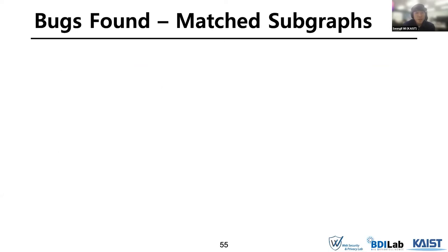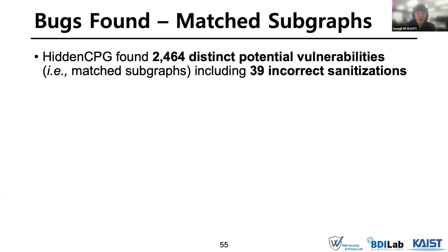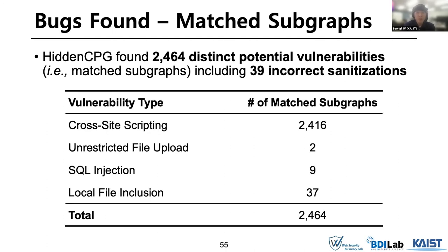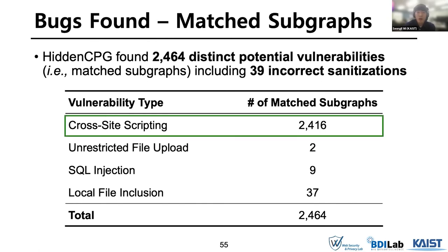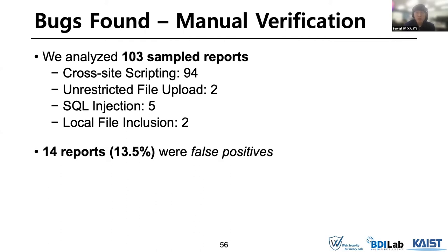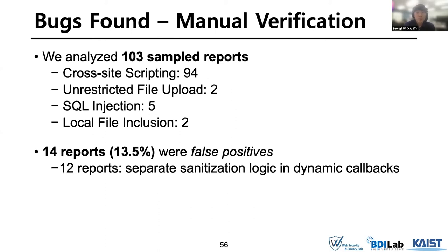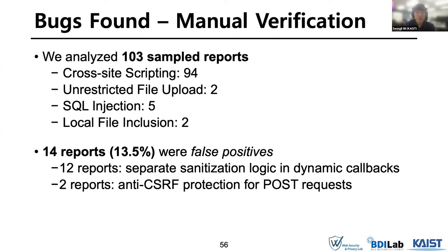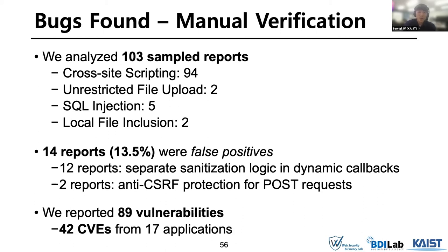We first evaluated the efficiency in terms of finding bugs. We counted the number of matched subgraphs to see the number of potential bugs. Our system found about 2,000 potential bugs, including 39 from incorrect sanitizations. We then sampled and manually verified 103 reports from highly rated applications. About 14% of the reports were false positives: 12 reports stem from separate sanitizations in dynamic callbacks, and 2 reports where developers implemented anti-CSRF protection properly. We reported the remaining 89 bugs to their corresponding vendors and received 42 CVEs.